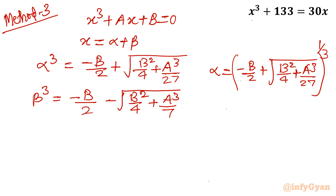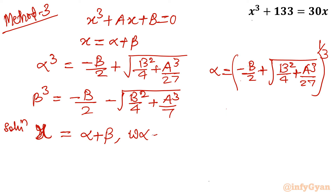The three solutions for x are: first, x equals alpha plus beta; second, x equals omega times alpha plus omega squared times beta; third, x equals omega squared times alpha plus omega times beta. Here omega, the cube root of unity, equals minus 1 plus i root 3, over 2. Now comparing our original equation x cubed minus 30x plus 133 equal to 0, we identify a equals minus 30 and b equals 133.